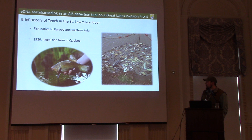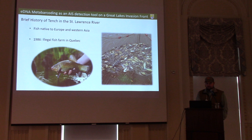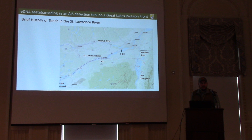The invasion front I'm going to be talking about is tench on the St. Lawrence River. To give a brief history: this is a cyprinid native to Europe and Western Asia. In 1986, there was an unlicensed fish farm in Quebec that had fish illegally, and those fish soon got into the Richelieu River and from there moved throughout the system. I'll use this map to give a quick rundown of the spread since 1986.